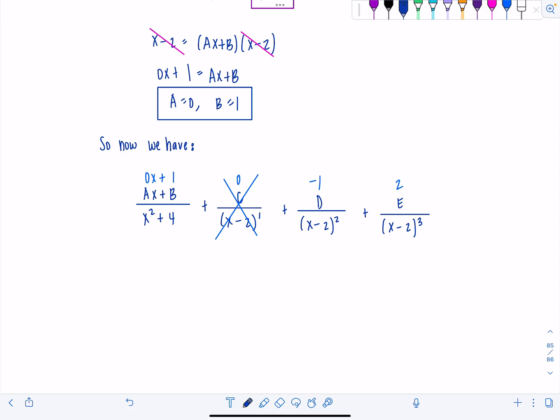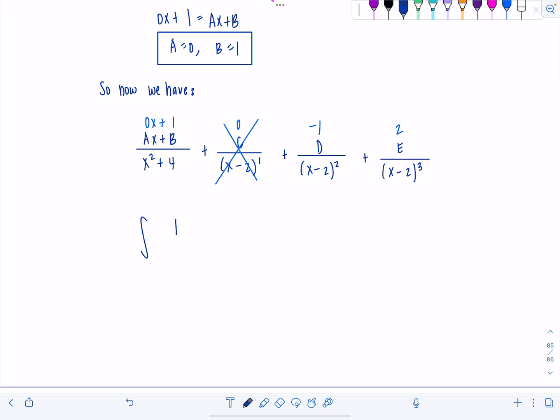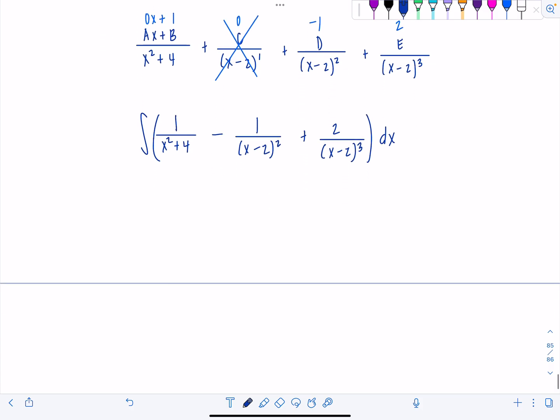So let's write out. We have the integral or antiderivative 1 over x squared plus 4 minus 1 over x minus 2 squared plus 2 over x minus 2 cubed dx. And all of these you should be able to do pretty easily. Let me rewrite it really quickly. 1 over x squared plus 4 you should have the antiderivative memorized. This one I want you to think of it as like x minus 2 to the negative second and then plus 2 times x minus 2 to the negative third.